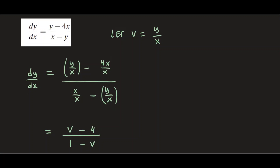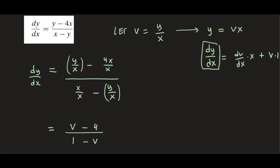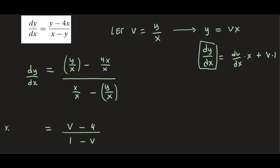We need to replace dy/dx, so we come back to our substitution and find dy/dx. Solving for y gives us y equals v times x. Using the product rule, we differentiate with respect to x: dy/dx equals dv/dx times x plus v times 1. So we replace dy/dx with x dv/dx plus v.